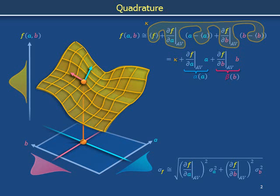We assume that the fluctuations in A and B are statistically independent. This means that whatever jiggles kappa, alpha, and beta might have, the jiggles in kappa, the jiggles in alpha, and the jiggles in beta are all statistically independent of each other. As a consequence, the variance of F is the sum of the variances of kappa, of alpha, and of beta.